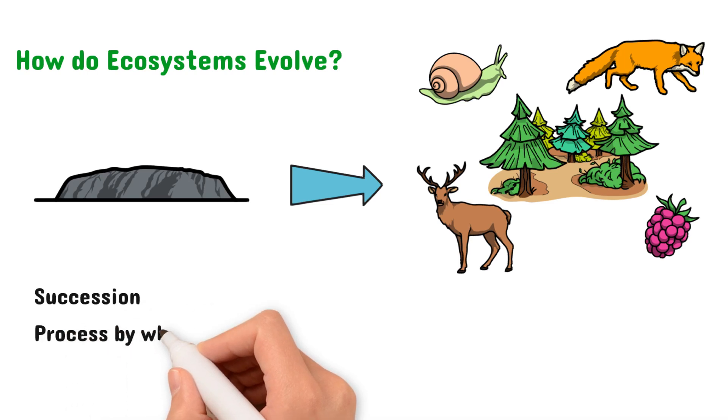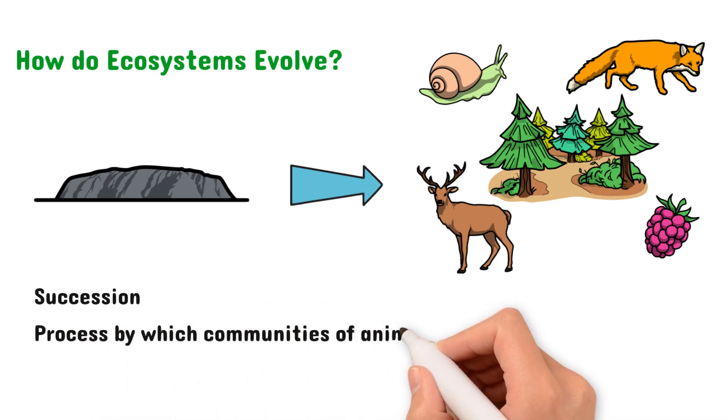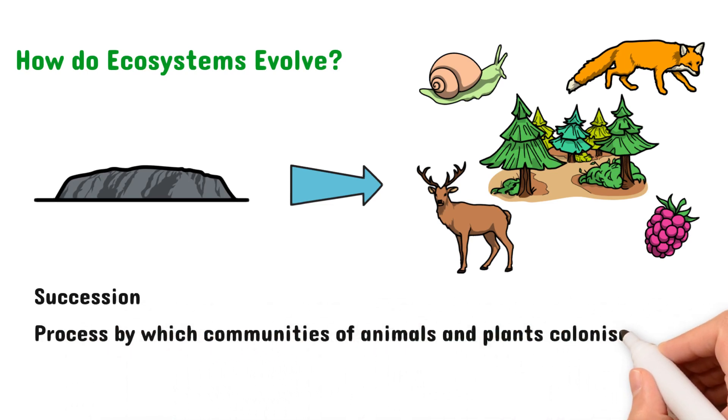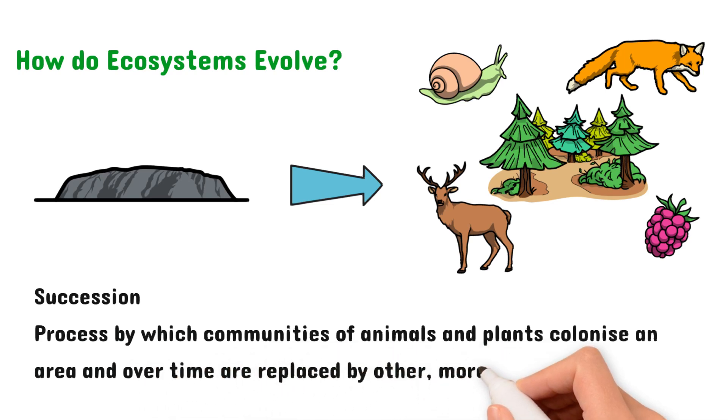Succession is defined as the process by which communities of organisms colonize an area and later over time are replaced by other, more varied communities. There are two types of succession, primary succession and secondary succession.